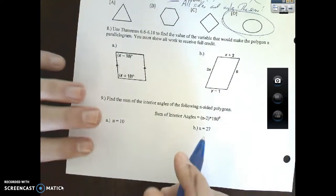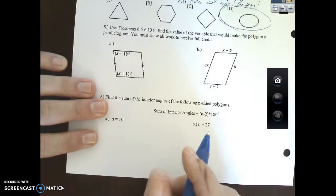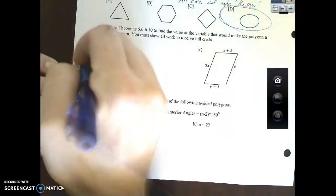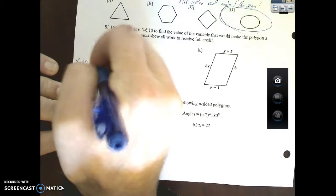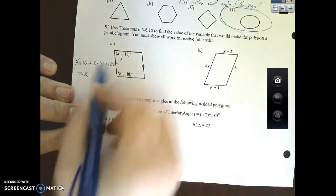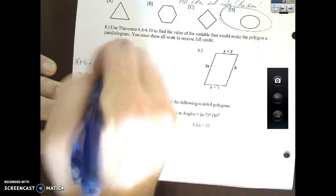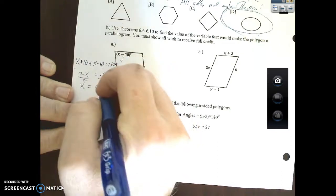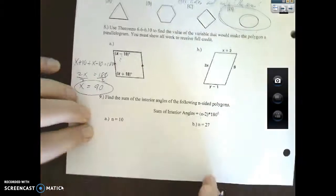Use theorems to find the value of the variable that make the polygon a parallelogram. Angles next to each other have to add to 180, so x plus 10 plus x minus 10 equals 180. X and x is 2x, 10 minus 10 is 0, divide by 2, x equals 90.